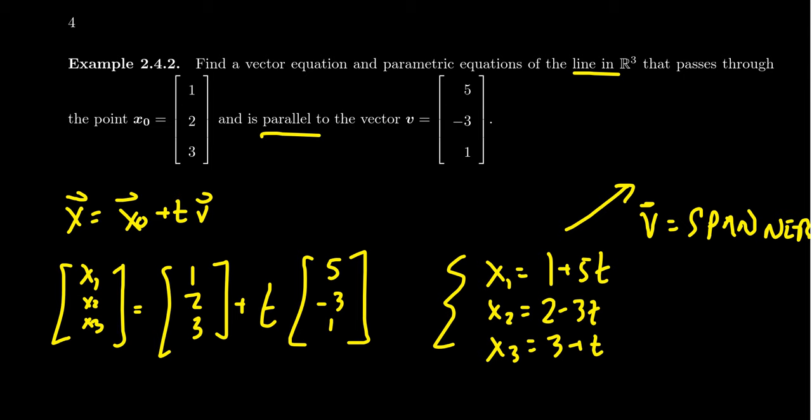And so that's all there really is to it. If I tell you the point on the line and I tell you the spanner, that's all there's going to be. We can come up with the vector equation. We can come up with the parametric equations like so.